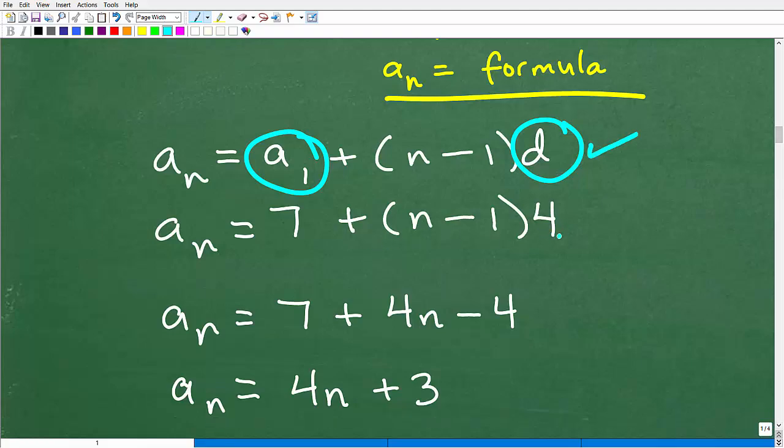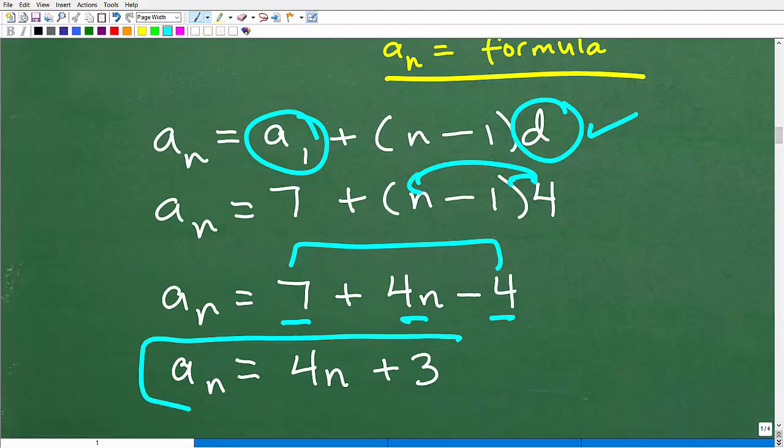d, again, is 4. That's our common difference. So now we can use the distributive property. 4 times n is 4n. 4 times 1 is 4. So we have 7 plus 4n minus 4. And then, of course, we can add these numbers right here. And we get a sub n is equal to 4n plus 3.